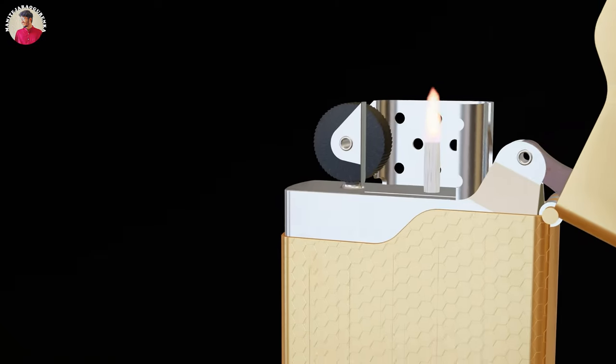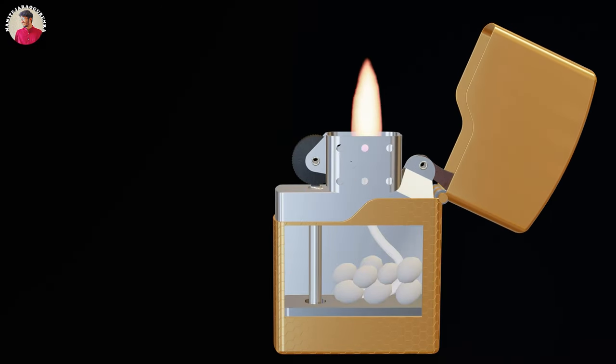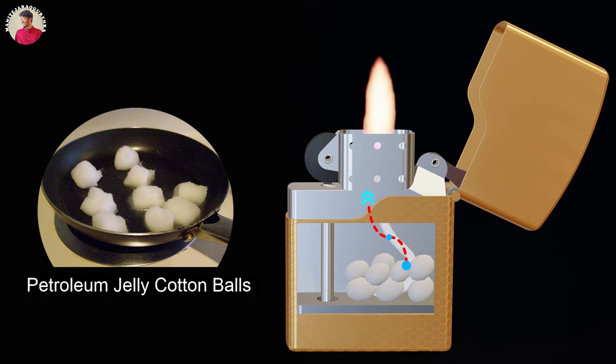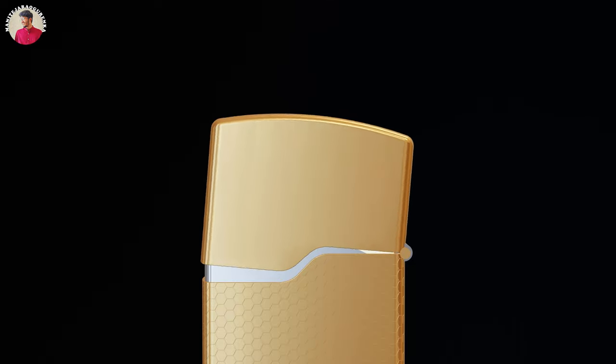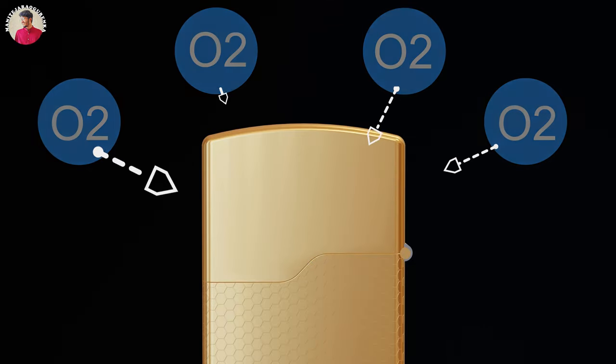The wick will start burning by drawing fuel from the inner case containing rayon balls, which are soaked in lighter fluids, like petroleum. Finally, when the top lid is closed, the flame will automatically stop due to the blockage of oxygen needed for combustion.